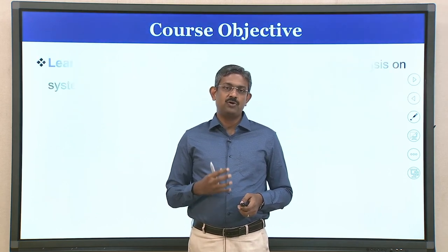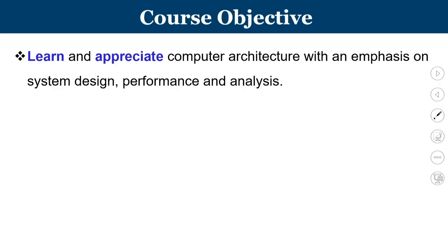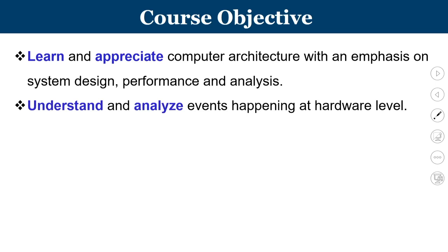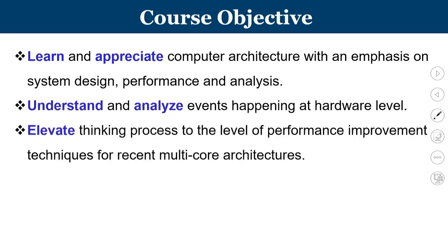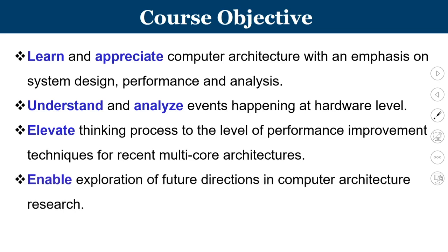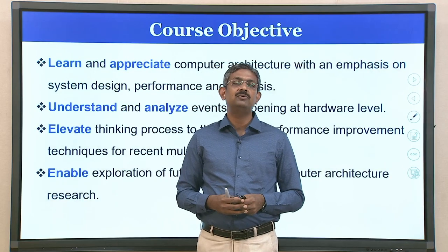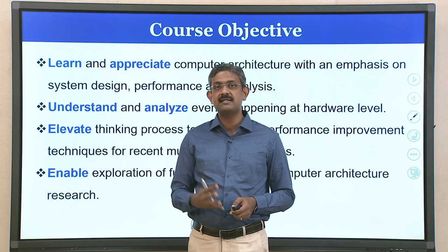Coming to the objectives of this course: the first is to learn and appreciate computer architecture with emphasis on system design, performance, and analysis. We will understand and analyze events at the hardware level, elevate our thinking to performance improvement techniques for recent multicore architectures, and the course will conclude by enabling some students to think of future directions in computer architecture research, helping those interested in taking up research in this domain.